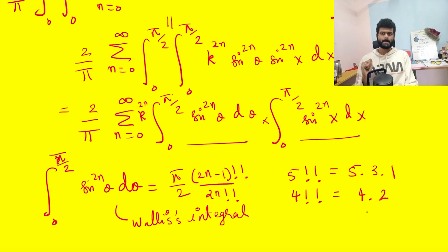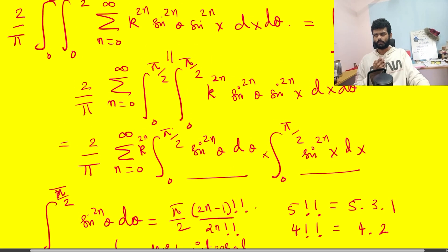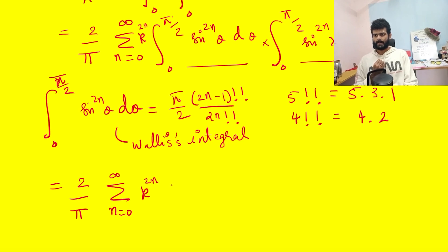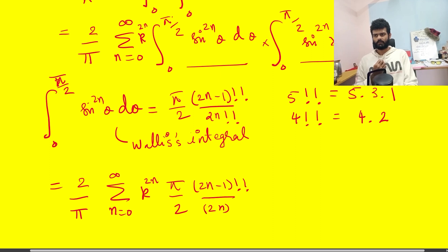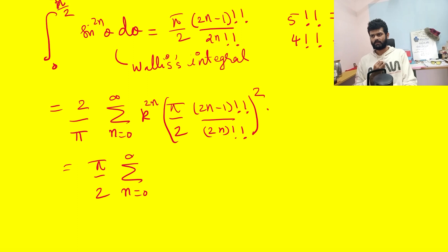Substituting the Wallis integral into our summation gives: Σ_{n=0}^∞ k^{2n} · [(π/2) · (2n−1)!!/(2n)!!]², which simplifies to (π/2) · Σ_{n=0}^∞ k^{2n} · [(2n−1)!!/(2n)!!]² after pulling out the (π/2)² and multiplying by the (2/π) factor.